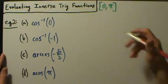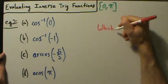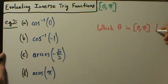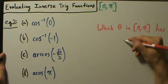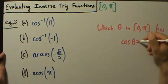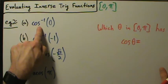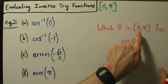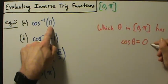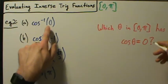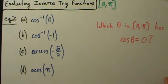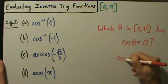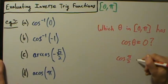We ask ourselves: which theta in the interval 0 to pi has cosine of theta equal to our input value? For part A, we want the inverse cosine of 0. So which theta in 0 to pi has cosine of theta equal to 0? It really just comes down to knowing the unit circle — if you don't know it, pull one out — and you'll see that cosine of pi over 2 is 0.